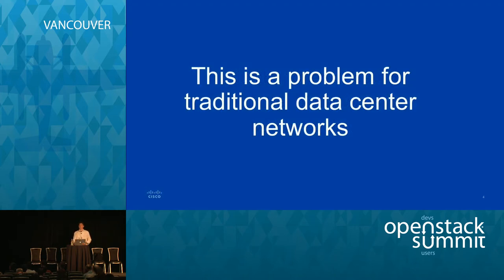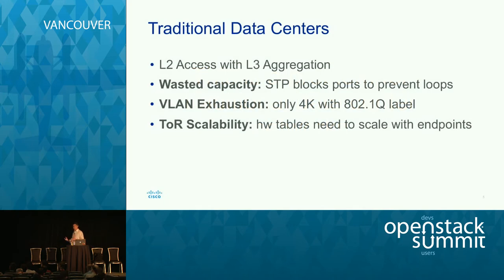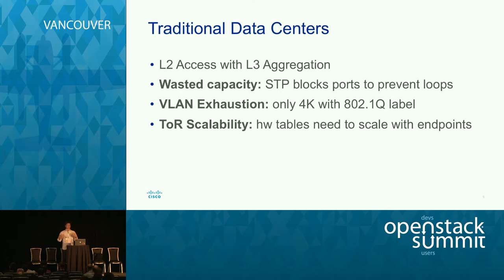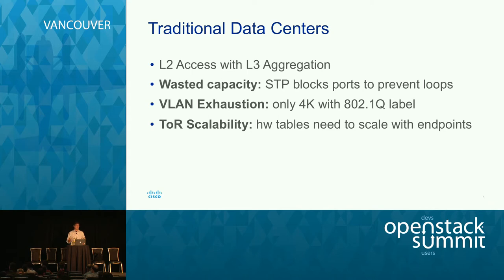This is a problem for traditional data center networks, because they were designed with L2 access aggregating into an L3 IP core. There are a couple of inefficiencies: first, wasted capacity — using STP, which you need at L2 to prevent loops in your network topology, blocks a lot of ports. You also have VLAN exhaustion: with a single 802.1q label you only have up to roughly 4,000 VLAN IDs, a problem when you have more than 4,000 tenants. Top-of-rack scalability is also an issue as the number of L2 endpoints increases.